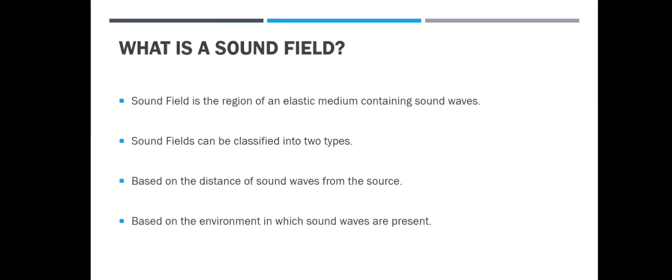So what is a sound field? A sound field is a region of an elastic medium that contains sound waves. Sound fields can be classified into two main types: based on the distance of the sound waves from the source, or based on the environment in which the sound waves are present.